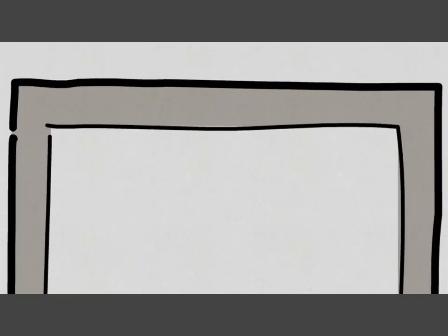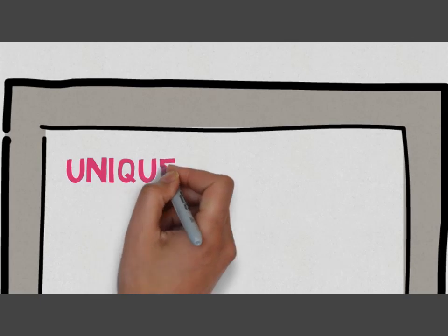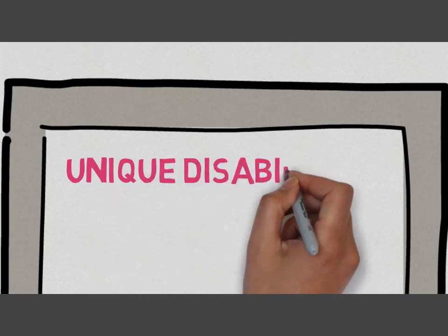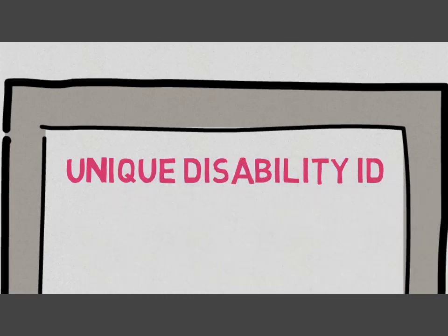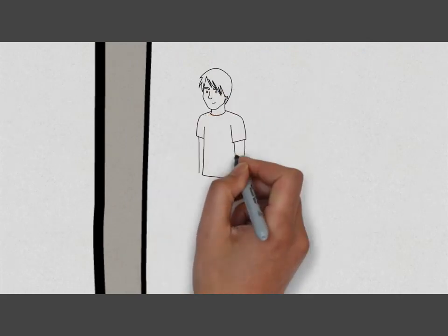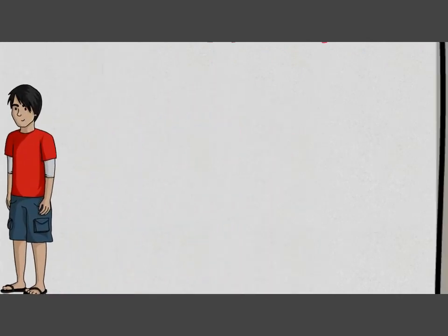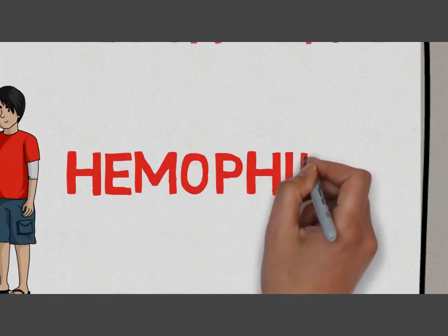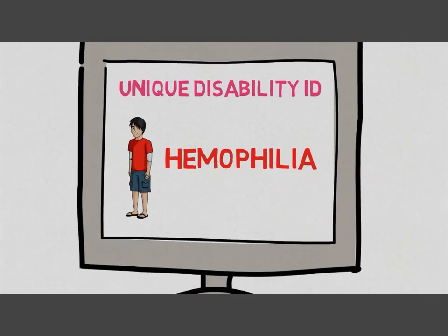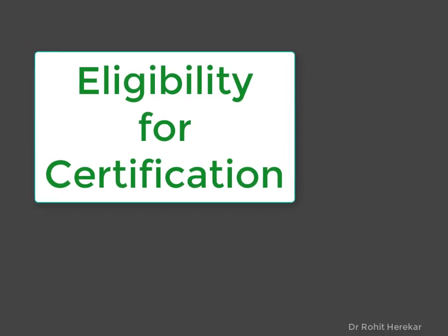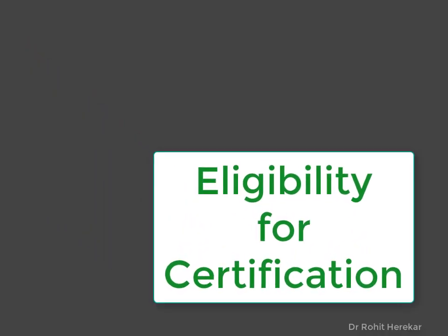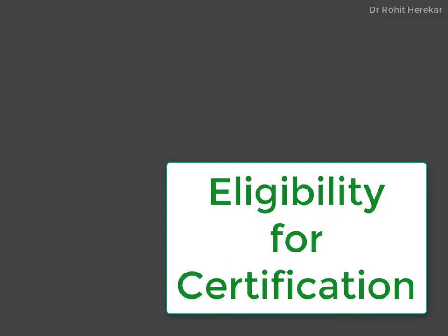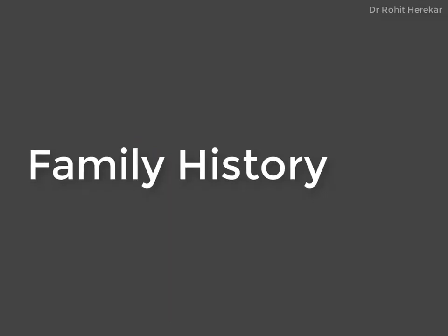Hello everyone. Hope you have seen Part 1 on the basics of filling the Unique Disability Certificate. In this video we are going to see Haemophilia disability certification. As you already know, the commonest type is Haemophilia A, where there is a problem in coagulation due to factor 8 deficiency. Persons with Haemophilia will receive a certificate.